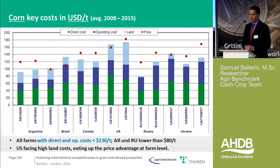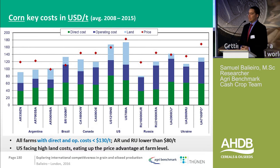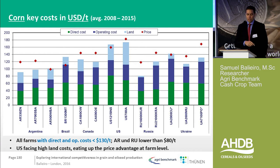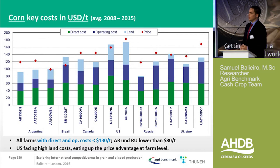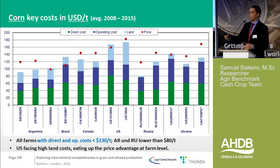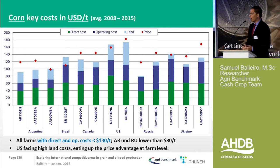Corn prices vary a lot. In Brazil, they are much lower than in Argentina — there are a lot of transportation costs. From the Mato Grosso farm, we have to transport corn almost 2,000 kilometers. Usually you pay the same price for one ton of corn as you pay for handling and transportation. That's why you see much higher farm gate prices for corn in the US.